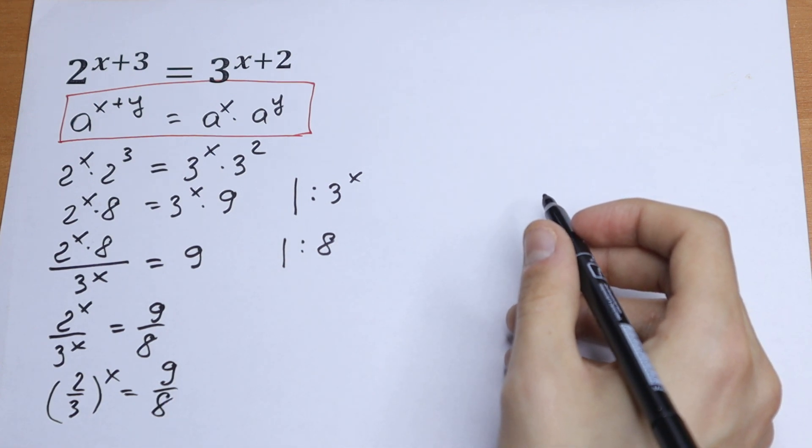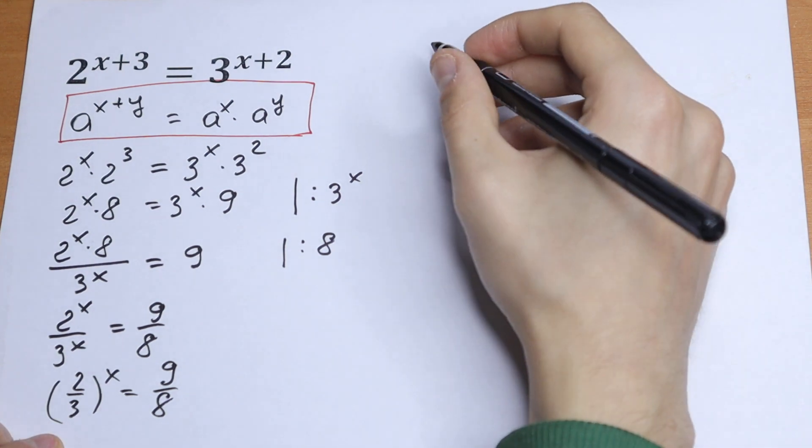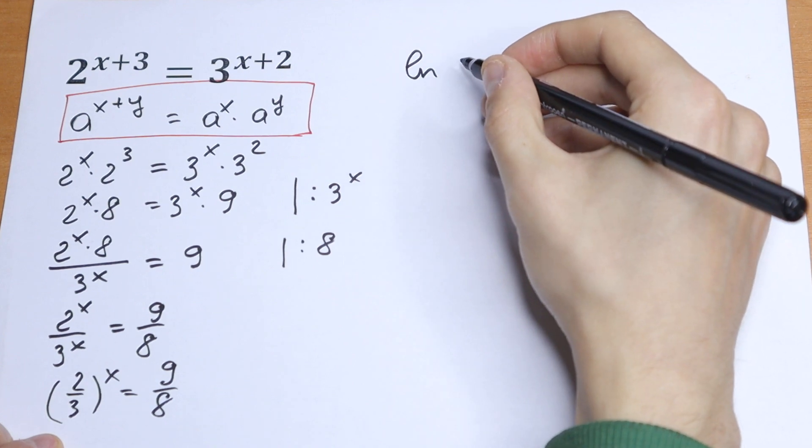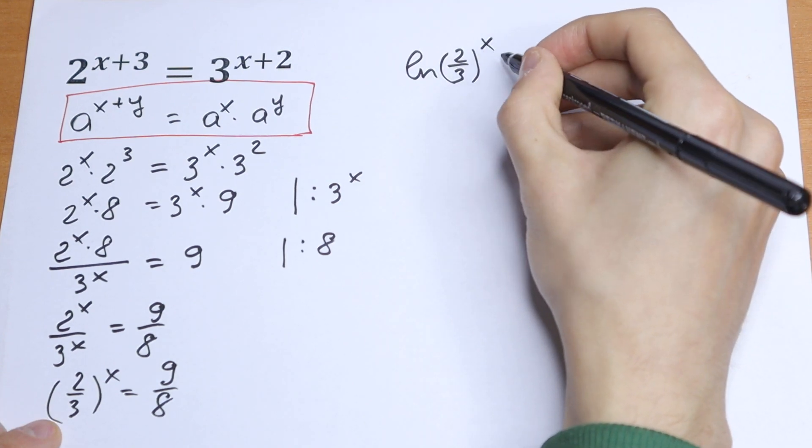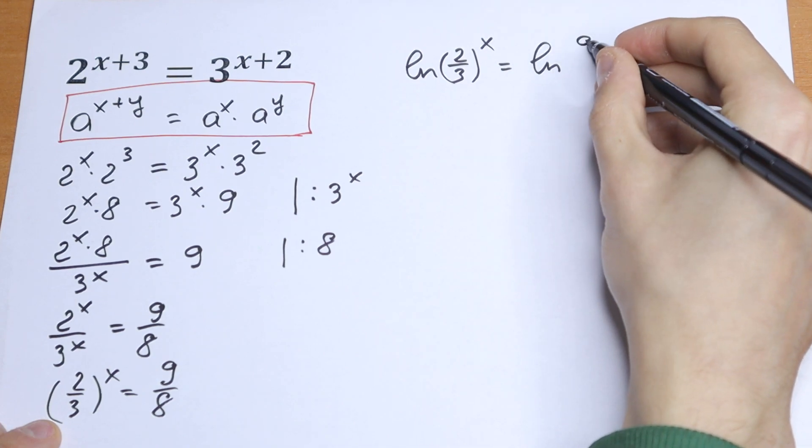Really good case because we can solve it with natural log. Let's take natural log from the left, 2 over 3 to the power x, and natural log from the right.